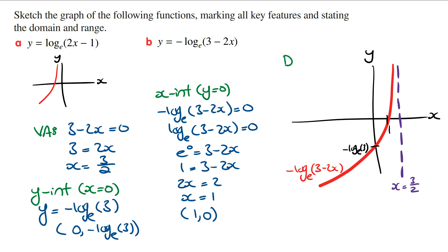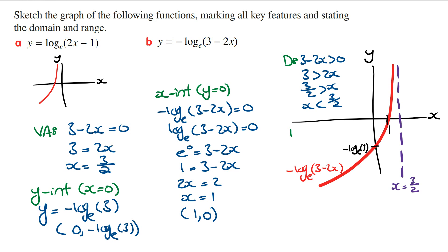For the domain of this function, we set 3 minus 2x to be larger than 0 and solve for x. So 3 is larger than 2x, which means x has to be less than three halves. The domain is all x values less than three halves, not including three halves. The range of this function is all real numbers.